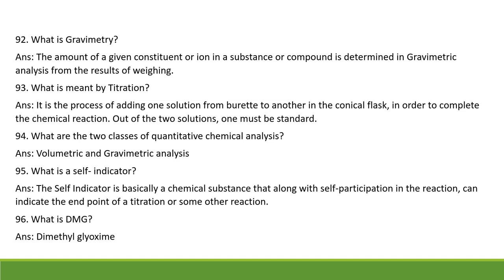What is gravimetric analysis? The amount of a given constituent or ion in a substance is determined from the results of weighing. In volumetric analysis, the amount of substance is known by measuring volume. What is meant by titration? It is the process of adding one solution from the burette to another solution taken in the conical flask in order to complete the chemical reaction — one of these solutions must be of known concentration. The two classes of quantitative analysis are volumetric and gravimetric. What is a self-indicator? It is a substance that participates in the reaction and also helps to indicate the end point of a titration.